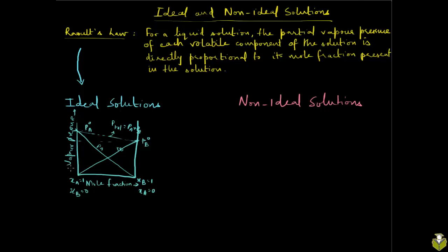Besides the fact that ideal solutions follow Raoult's law exactly, they also exhibit two other important properties: delta V mix, meaning the change in volume when you mix these two liquids to form a solution, is equal to zero, and enthalpy of mixing, delta H mix, is also equal to zero.